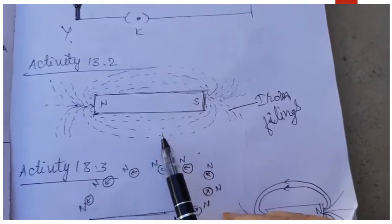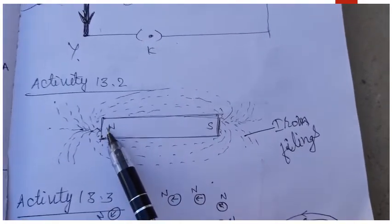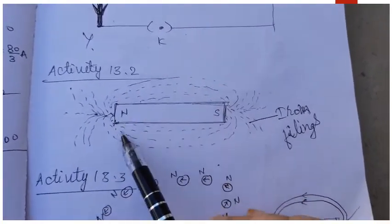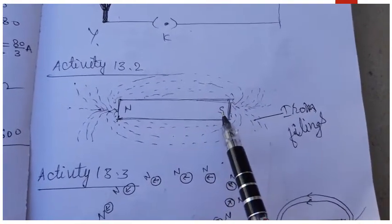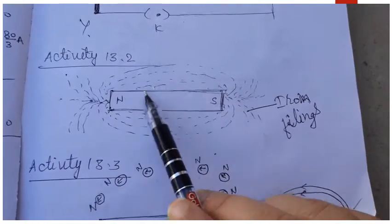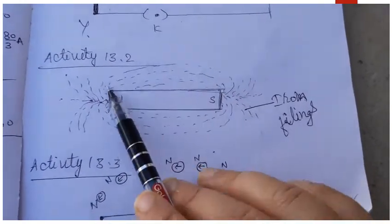After some time you observe that the iron fillings arrange in a certain pattern which I have shown here. It means that the magnetic field of the bar magnet is making the iron fillings arrange themselves.